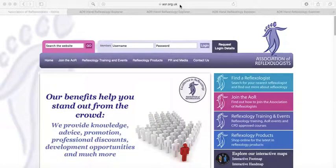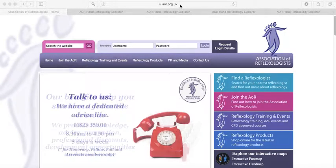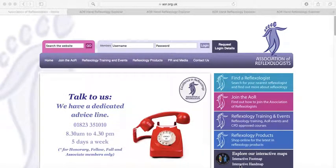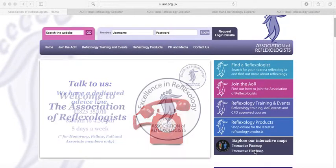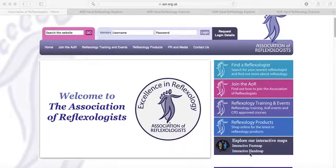So on this website, which is www.aor.org.uk, you can click on Explore Our Interactive Maps and click on Interactive Handmap.